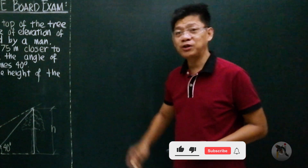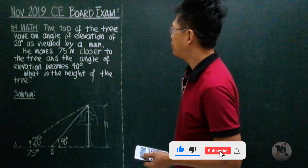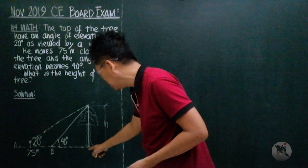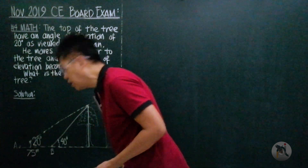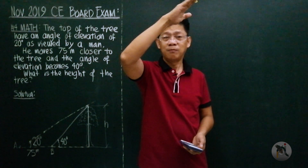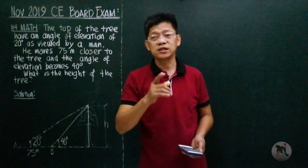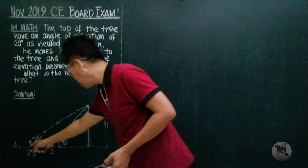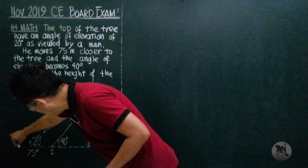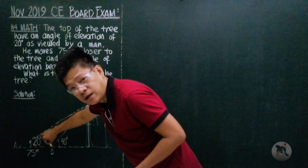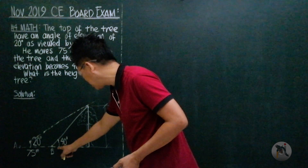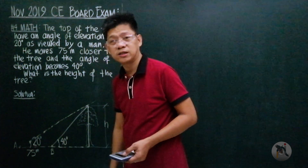What about this problem: the top of the tree has an angle of elevation. The man is at point A — angle of elevation means the angle from horizontal going up, while angle of depression goes down. The angle of elevation is 20 degrees. Then he walked towards the tree 75 meters, and now the angle of elevation of the top of the tree is 40 degrees.